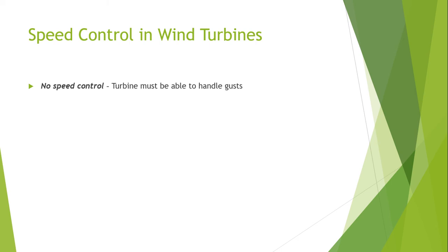When there is no speed control, the turbine must be able to handle wind gusts. Wind turbine control is necessary to ensure low maintenance cost and effective performance. The control system also guarantees safe operation of the wind turbine, optimizes power output, and ensures a long structural life.